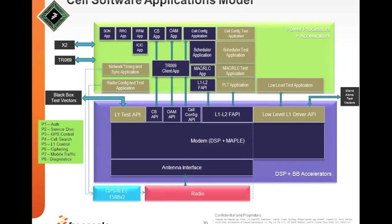There is OAM for monitoring the network, cell configuration, a scheduler that schedules users based on their profile — whether voice or data — and the layer 1 and layer 2 FAPI application. This picture shows how software applications can be created on the architecture to devise a small cell solution.